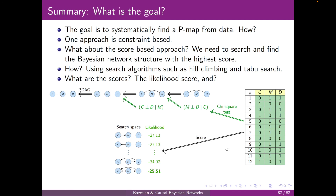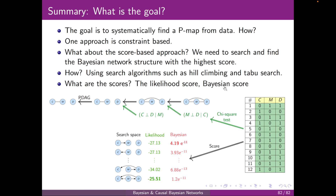To summarize: we already saw the likelihood score, and here we saw the Bayesian score. The Bayesian score tends to overfit less than the likelihood score. In our example, the structure with the highest Bayesian score was selected. In the next section, we will see if there are other scores.